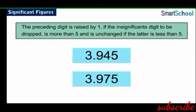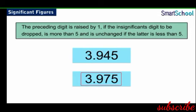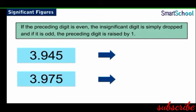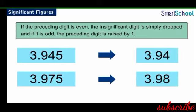Consider two numbers 3.945 and 3.975, to be rounded off to three significant digits. In this case, the insignificant digit to be dropped is equal to 5 in both numbers. Another convention states that if the preceding digit is even, the insignificant digit is simply dropped; and if the preceding digit is odd, it is raised by 1. Thus, the answers are 3.94 and 3.98 respectively.